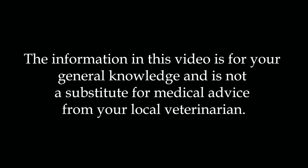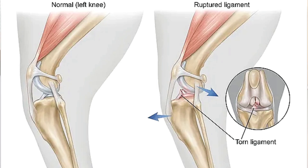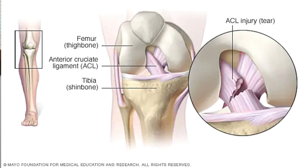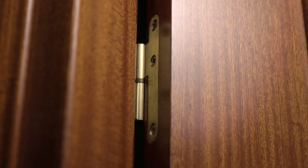The cranial cruciate ligament is one of the most important stabilizers within the stifle, or the knee, of your cat or your dog. In humans, the cranial cruciate ligament is known as the ACL. The cruciate ligaments form an X within the joint in order to help stabilize the stifle. This allows the stifle to move back and forth like a hinge, but it helps to restrict any side-to-side motion.